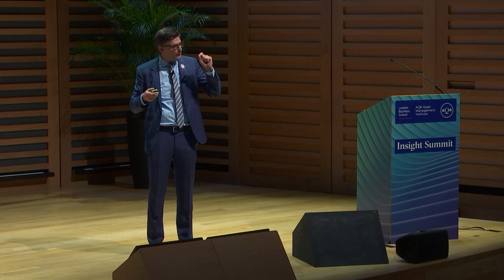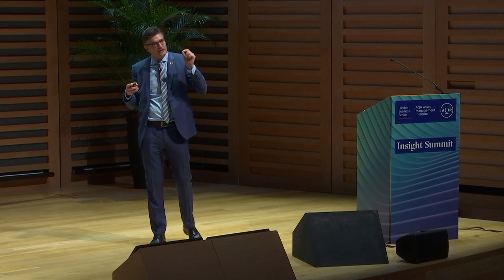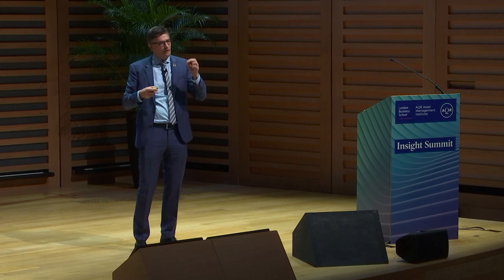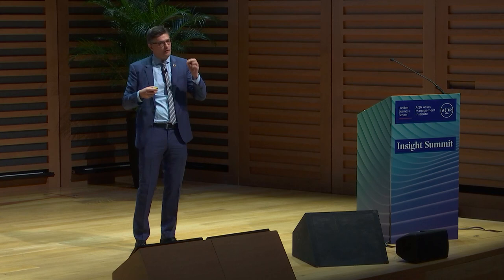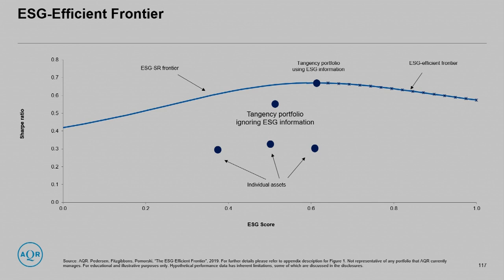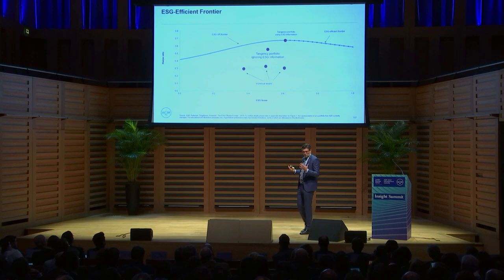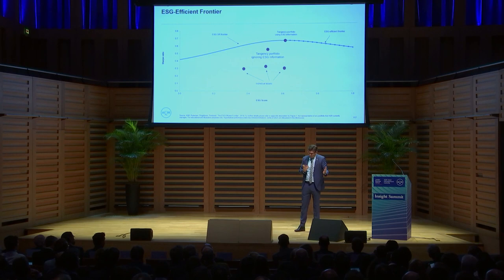The ESG-unaware investors also try to buy the tangency portfolio, but their tangency portfolio is not the same because they're using suboptimal measures of expected return and risk. Therefore, the portfolio they pick will actually potentially fall below this curve. If ESG is informative — and that's an empirical question — then ignoring ESG can lower your Sharpe ratio. So you can have these three investors — the unaware, the aware, and the ESG-motivated — picking three different portfolios. The aware should get the higher Sharpe ratio, and whether the motivated or the unaware gets higher Sharpe depends on the strength of these effects.